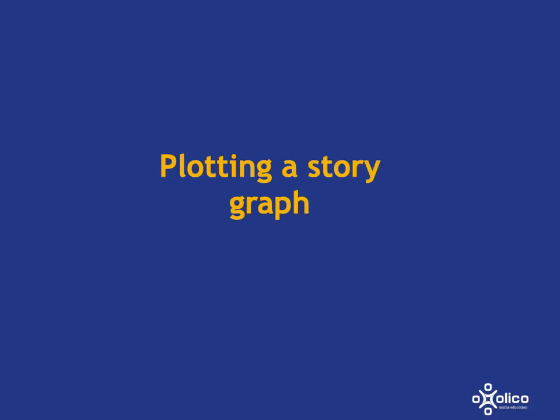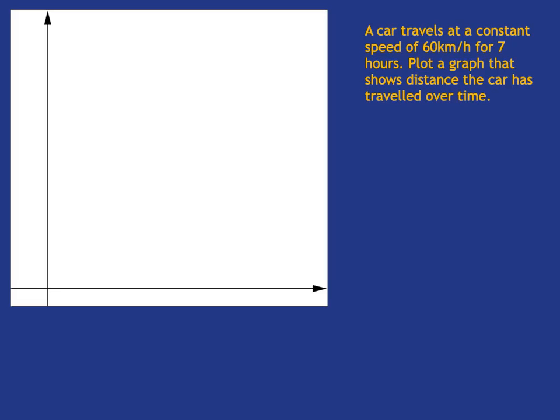Let's plot a graph that tells a story. The story we want to tell is the following. A car travels at a constant speed of 60 km per hour for 7 hours. And we want to plot a graph that shows the distance the car has travelled over time.